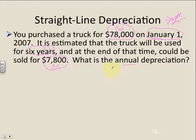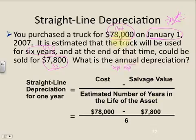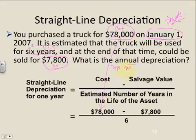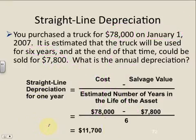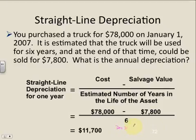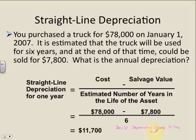What is the annual depreciation — the depreciation expense each year? Our formula is cost minus salvage value divided by useful life. We take our $78,000 as cost, subtract our salvage value, and divide by useful life. So our depreciation expense every year is $11,700. The journal entry on December 31st — remember this is an adjusting entry — is a debit to depreciation expense for $11,700 for the truck, and a credit to accumulated depreciation, truck, for the same amount.